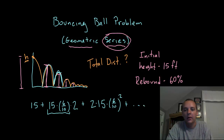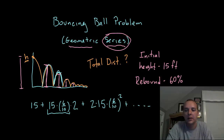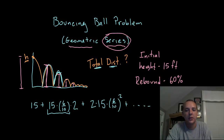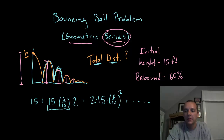And on and on — the pattern will be two times fifteen times six-tenths cubed, then to the fourth, then to the fifth, et cetera. If we can figure out what this infinite series equals, we'll be able to find the total distance traveled by the ball forever until it comes to a complete stop.